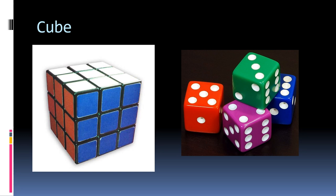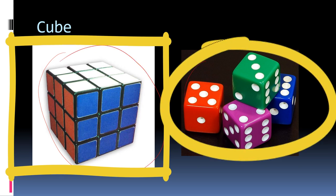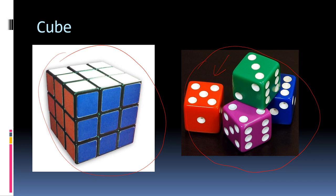Cube is a three-dimensional figure and these are some examples. For example you can see Rubik's cube here and also you can see dice. Both of these are examples of cubes.